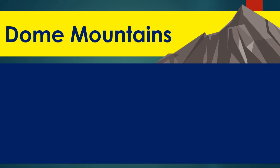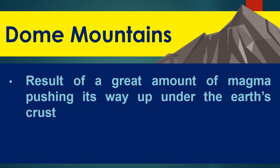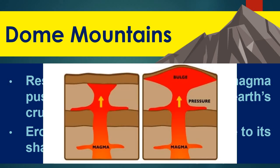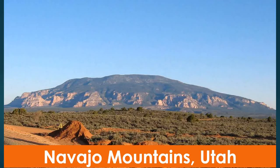Another type of mountain is dome mountains. From the term alone — dome. It is a result of a great amount of magma pushing its way up under the Earth's crust. But because it does not erupt, the magma won't come out; instead, a dome mountain forms. Erosion by wind and rain contribute to its shape. When the magma pushes the crust upwards but there isn't enough force to erupt, the result is the formation of a bulge due to the pressure — a dome mountain. An example is Navajo Mountain in Utah, with the magma underneath.